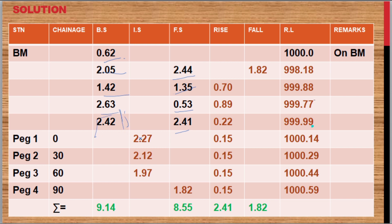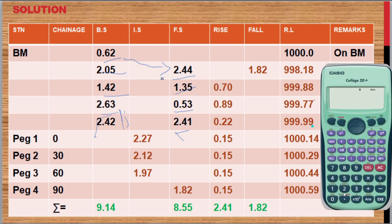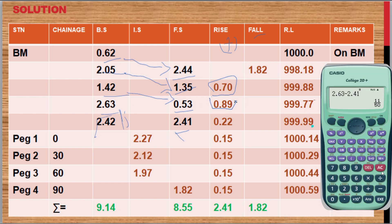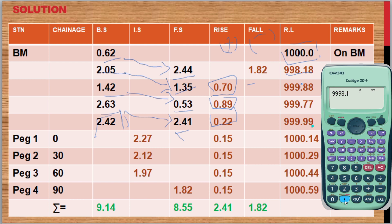Using the rise and fall method, you subtract the first reading from the second reading. If it's negative, it falls under 'fall'; if positive, it falls under 'rise'. The first reading minus the last reading gives a positive 0.7, then again a positive, then a positive 0.222. We were given the reduced level as 1000 on the benchmark, so we add or subtract accordingly. On the first, the reduced level minus the fall gives 998.18.